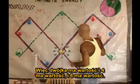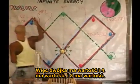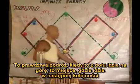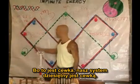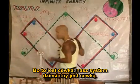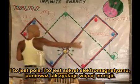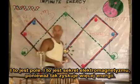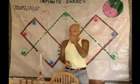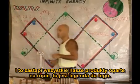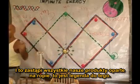Two has a quality. Four has a quality. Eight has a quality. It's really a trip that when you're at the lowest bottom, the top is where you go next, because this is a coil. Our decimal system is a coil, and this is the field. This is the secret of electromagnetism — that's why I'm getting more energy. This is going to replace all our petroleum products, everything. This is the legend for it.